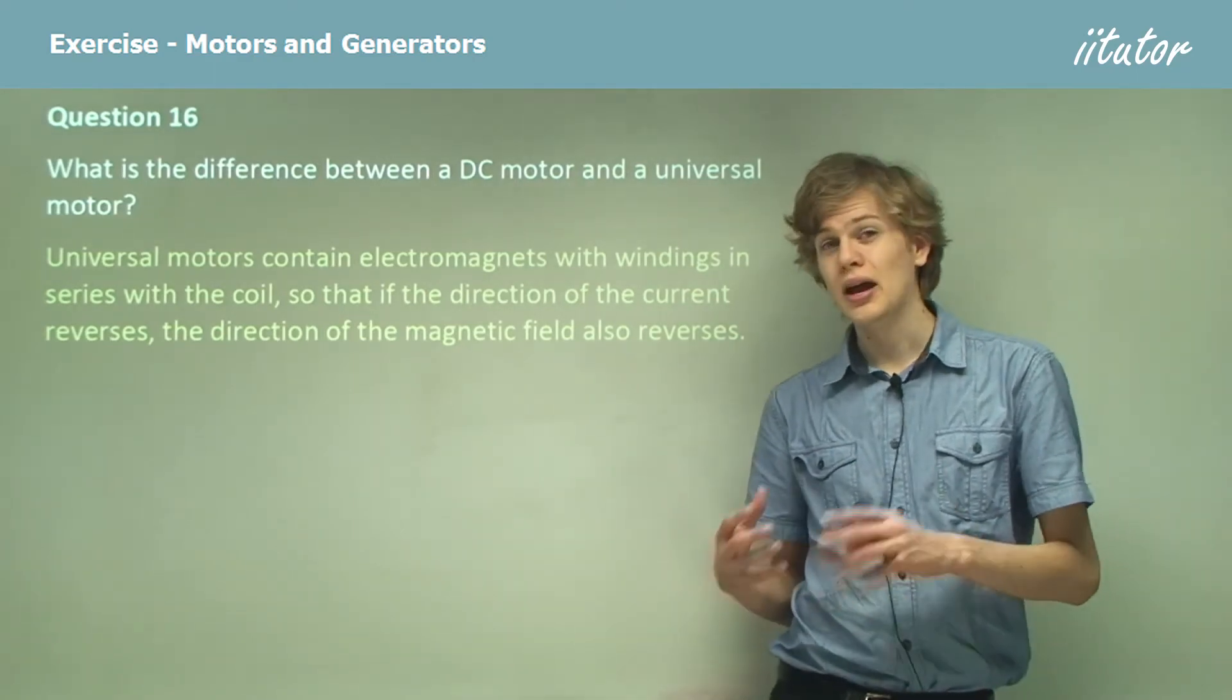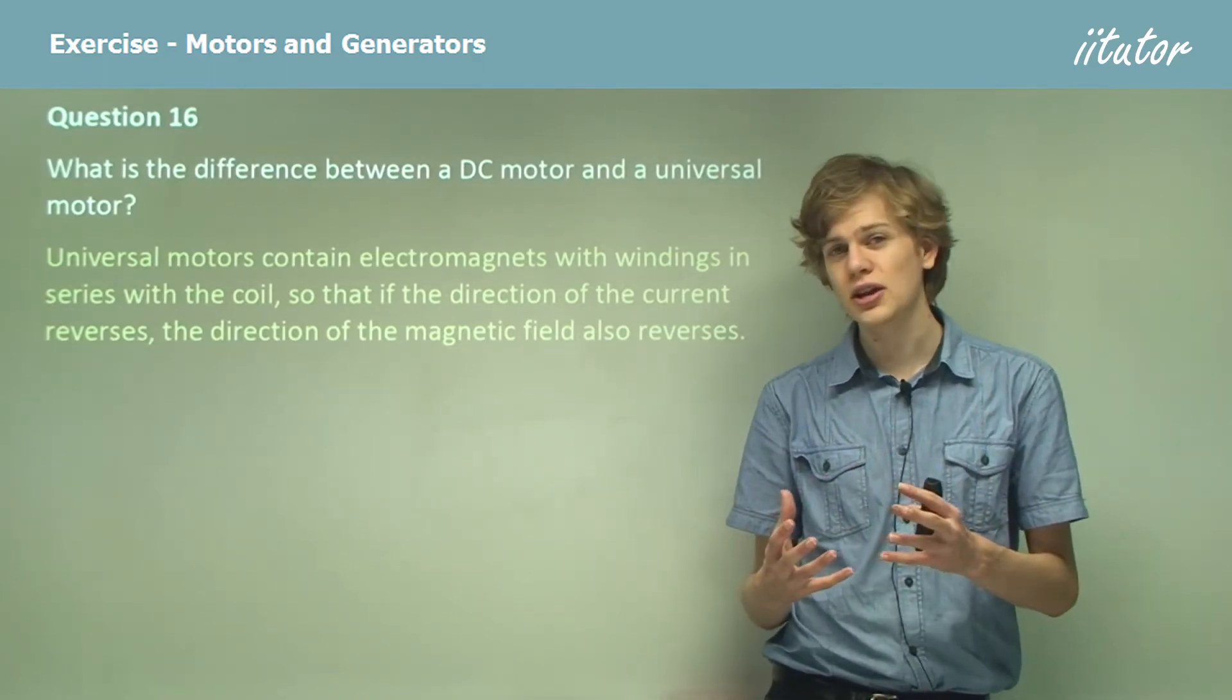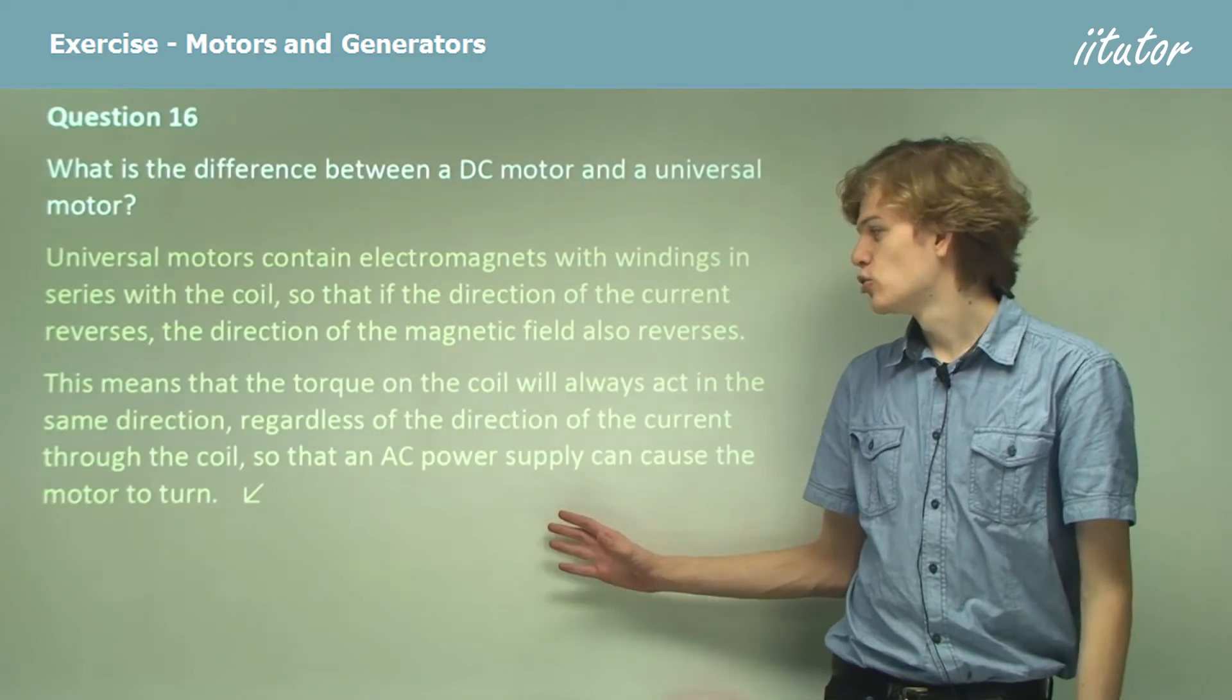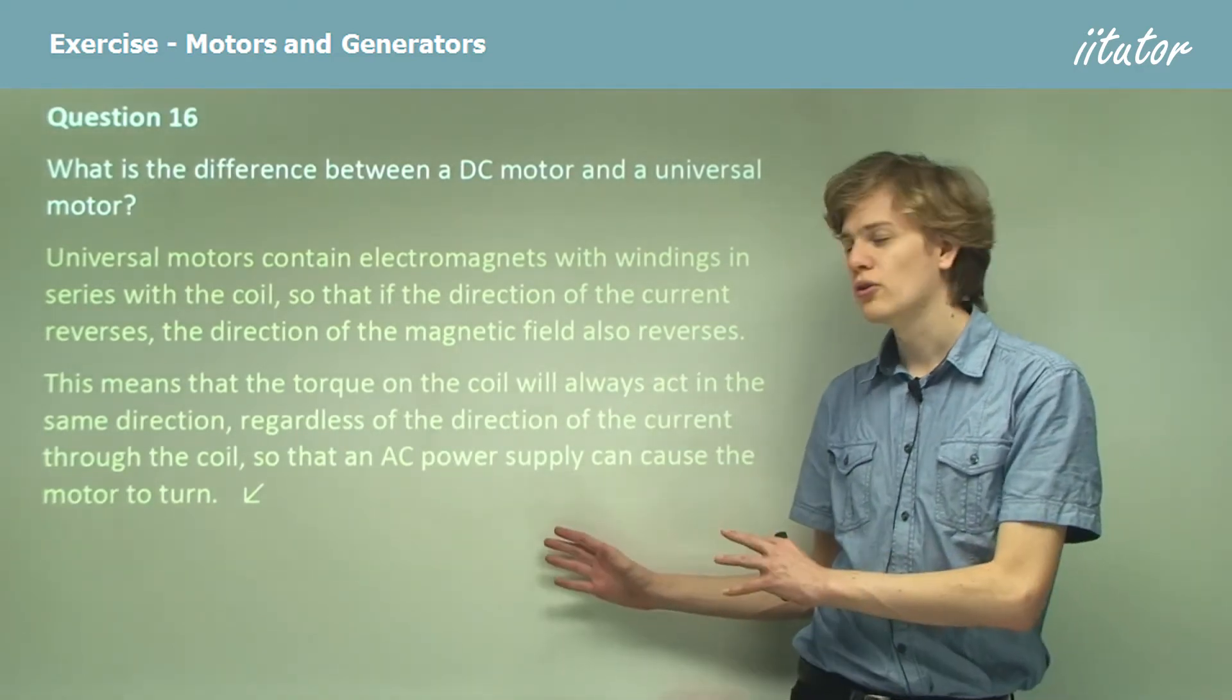So with an alternating power source, we don't have a stationary magnetic field for the stator field. This means that the torque in the coil will always act in the same direction, regardless of the direction of the current through the coil.